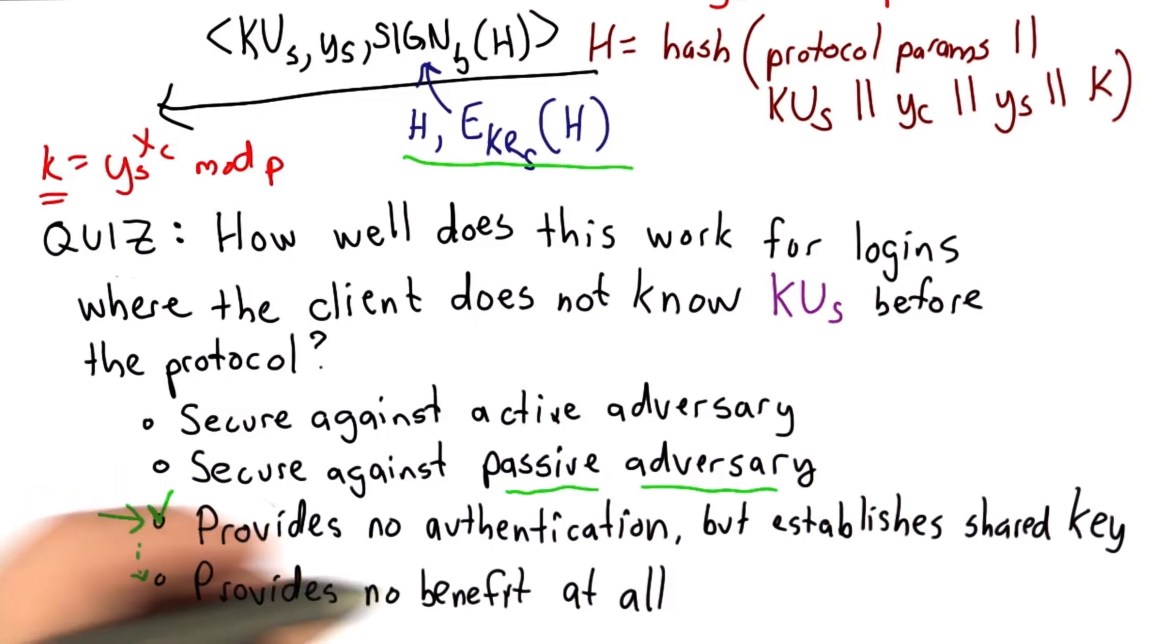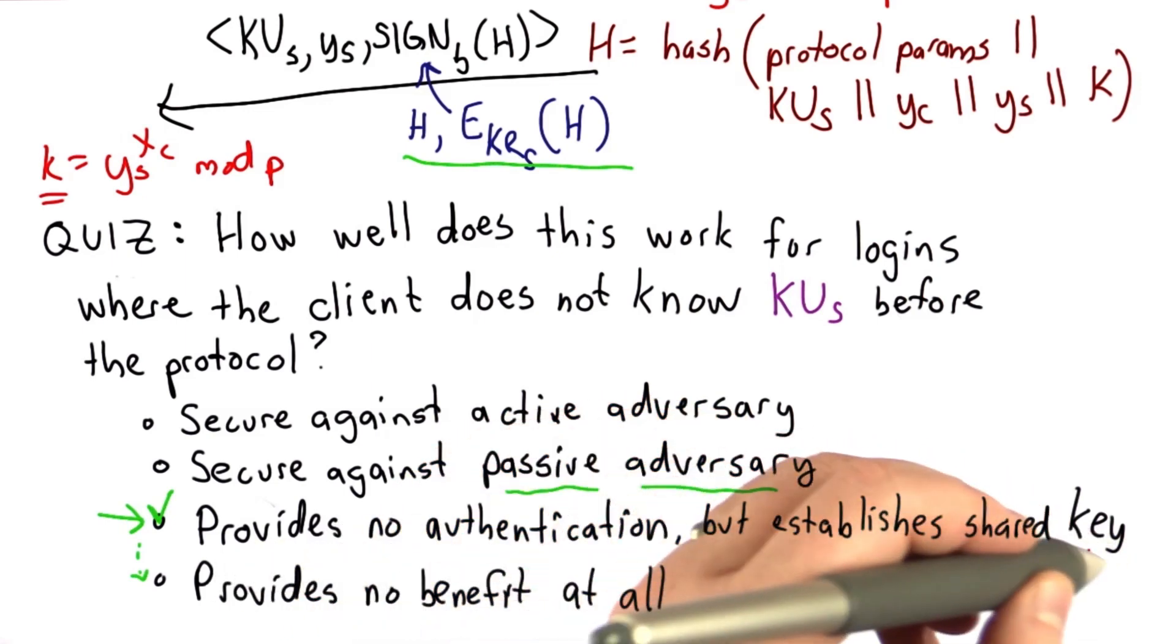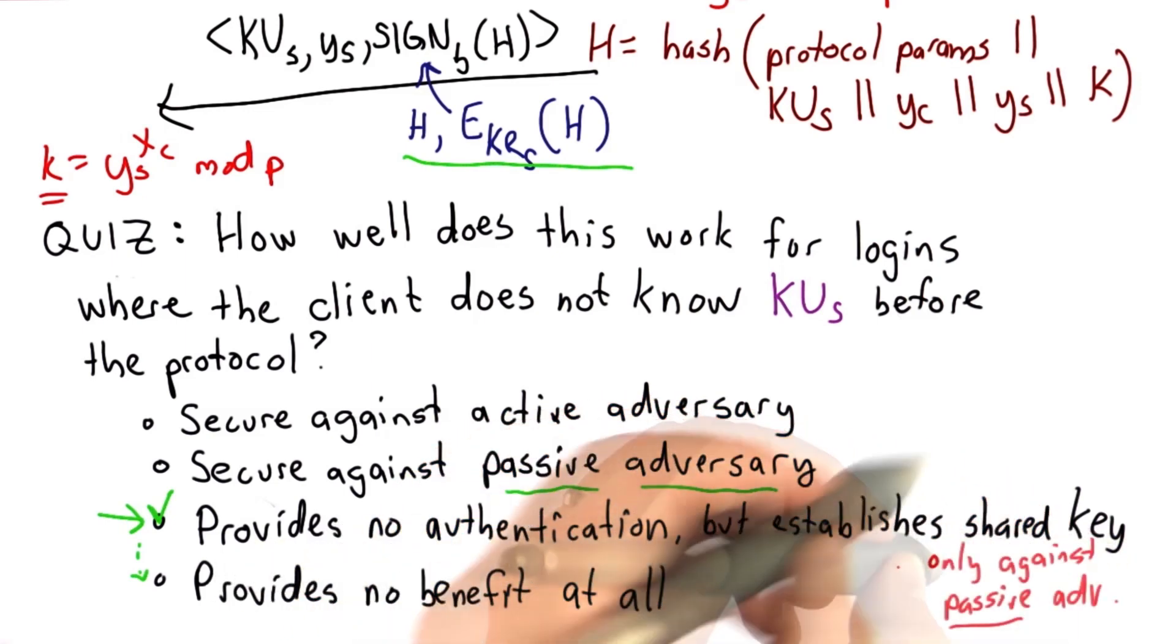And I should emphasize that this establishes a secure shared key only against a passive adversary, even without worrying about the authentication, since an active adversary can interfere with the key that's established.